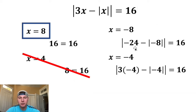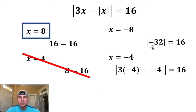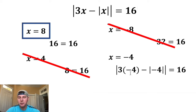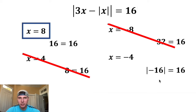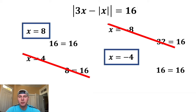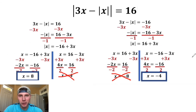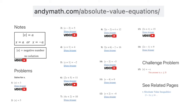For x equals negative 8: 3 times negative 8 is negative 24, absolute value of negative 8 is 8, and negative 24 minus 8 is negative 32. Absolute value of negative 32 is 32, which does not equal 16. For x equals negative 4: 3 times negative 4 is negative 12, absolute value of negative 4 is 4, and negative 12 minus 4 is negative 16. Absolute value of negative 16 is 16, which equals 16 — so x equals negative 4 is a solution. The two solutions are x equals 8 and x equals negative 4. For more problems like this, visit andymath.com.